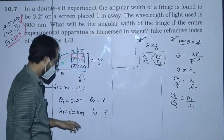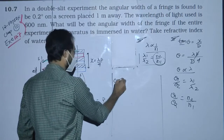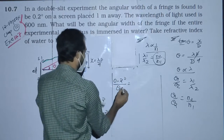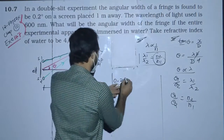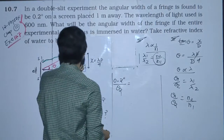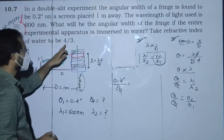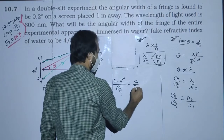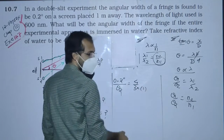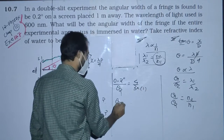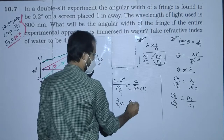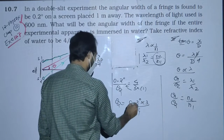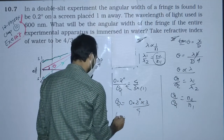Now putting in values: theta 1 is 0.2 degrees, theta 2 is unknown. n2, which is the refractive index of water, is 4/3, and n1 is 1 (air). So theta 2 equals 0.2 degrees multiplied by 3 upon 4. Now you can solve the problem.